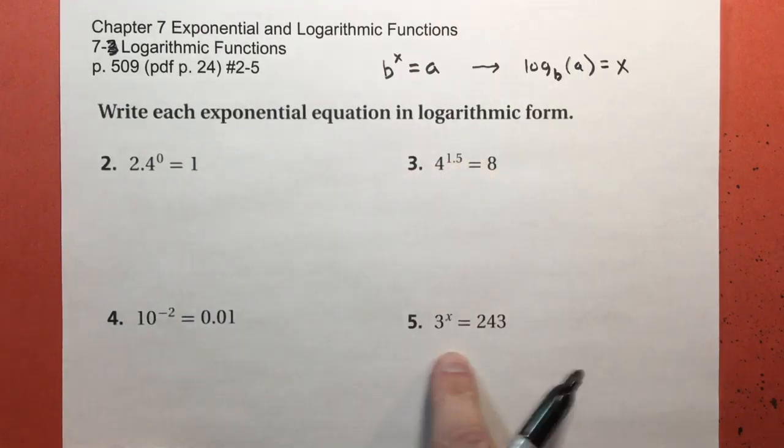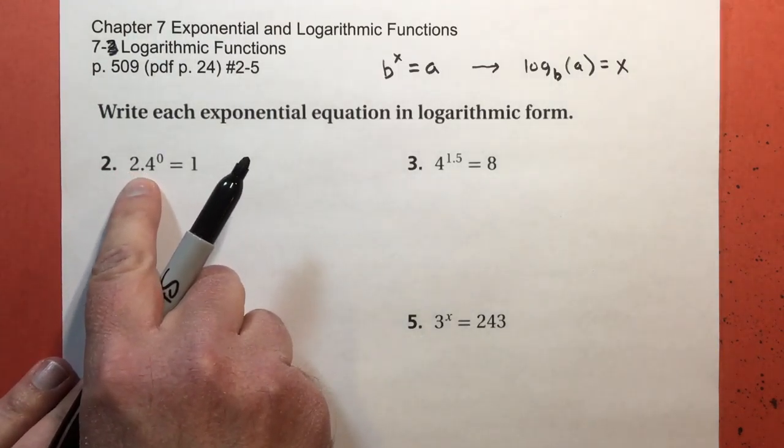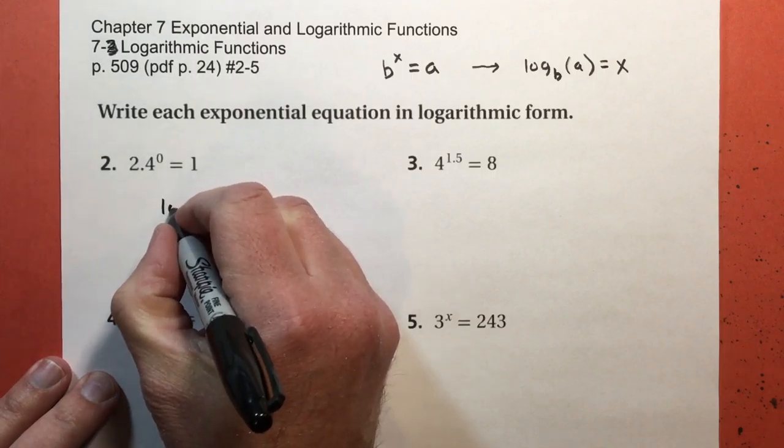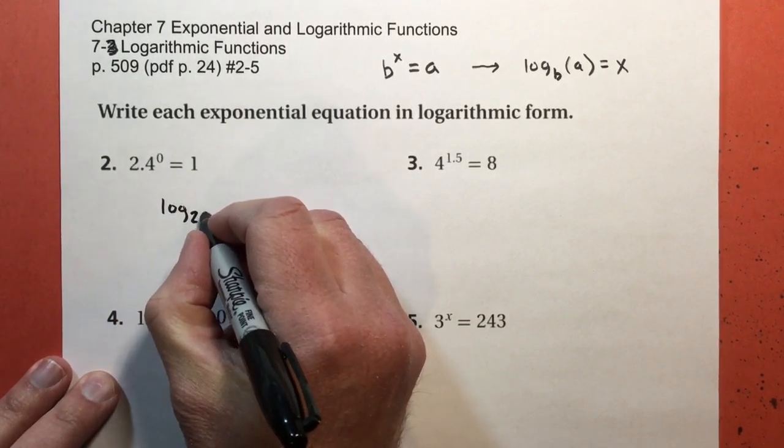I gotta take each of these in exponential form and just rewrite it. For the first one, 2.4 to the zero power equals 1. My base of my exponent is 2.4, so I'm gonna write log subscript 2.4.